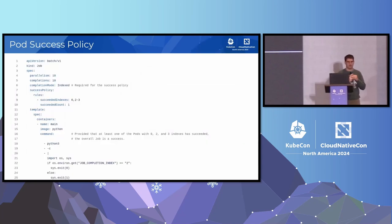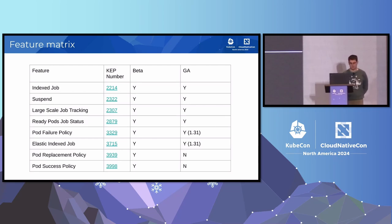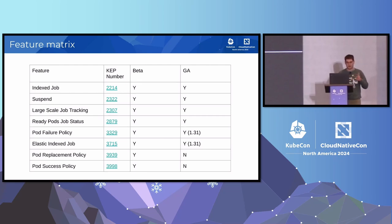Pod success policy is the counterpoint - when a pod of a certain index succeeds, you want to mark your job as successful. These are features the working group has sponsored over the last two or three years, and most are available in most Kubernetes clusters now. My first contribution was actually the pod replacement policy, which ensures that when a pod goes terminating, the job controller doesn't immediately create a replacement - that was causing problems with PyTorch frameworks because it would cause duplicate ranks.